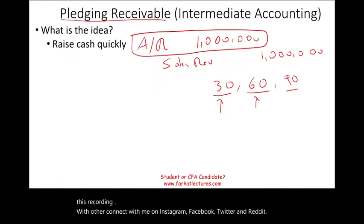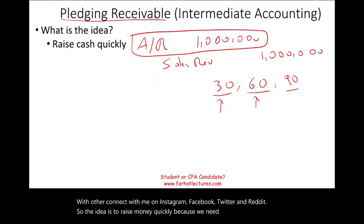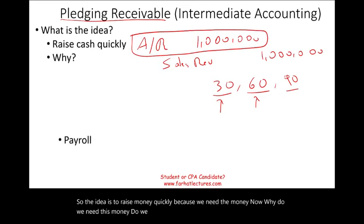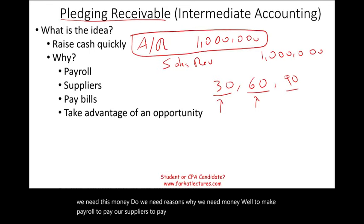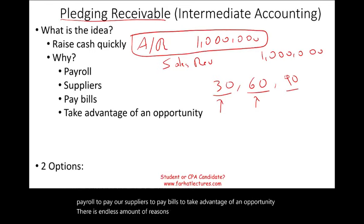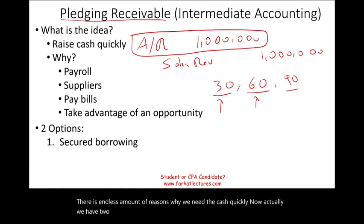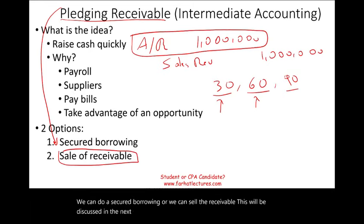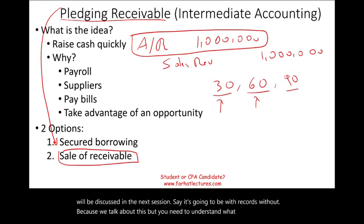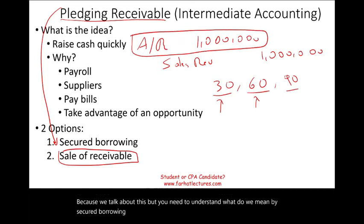The idea is to raise money quickly because we need the money. Why do we need this money? To make payroll, to pay our suppliers, to pay bills, to take advantage of an opportunity — there are endless reasons why we need cash quickly. We have two options: we can do the pledging, which is secured borrowing, or we can sell the receivable. Selling will be discussed in the next session — with recourse or without recourse. But first, you need to understand what we mean by secured borrowing and how we process the entries for secured borrowing.